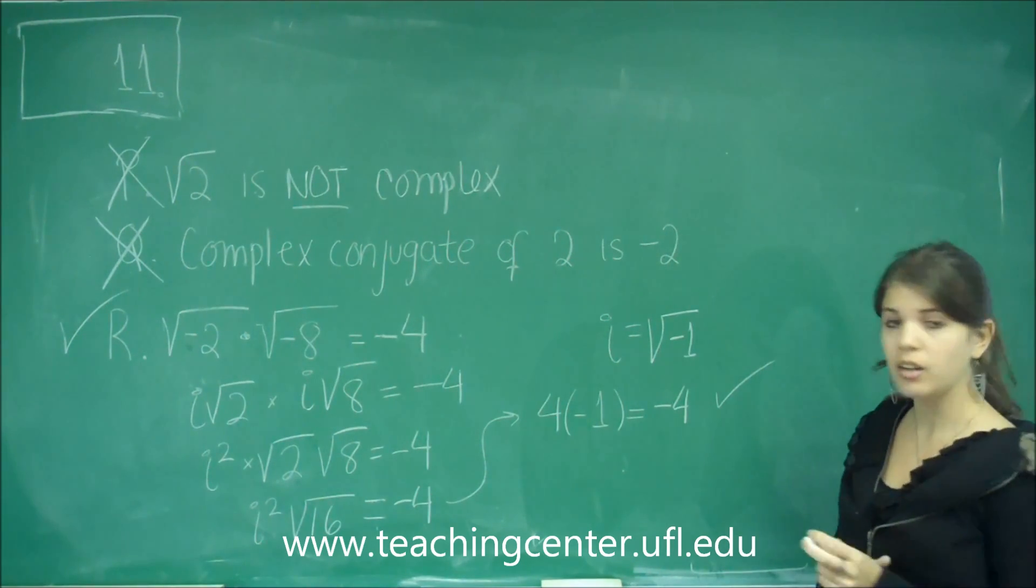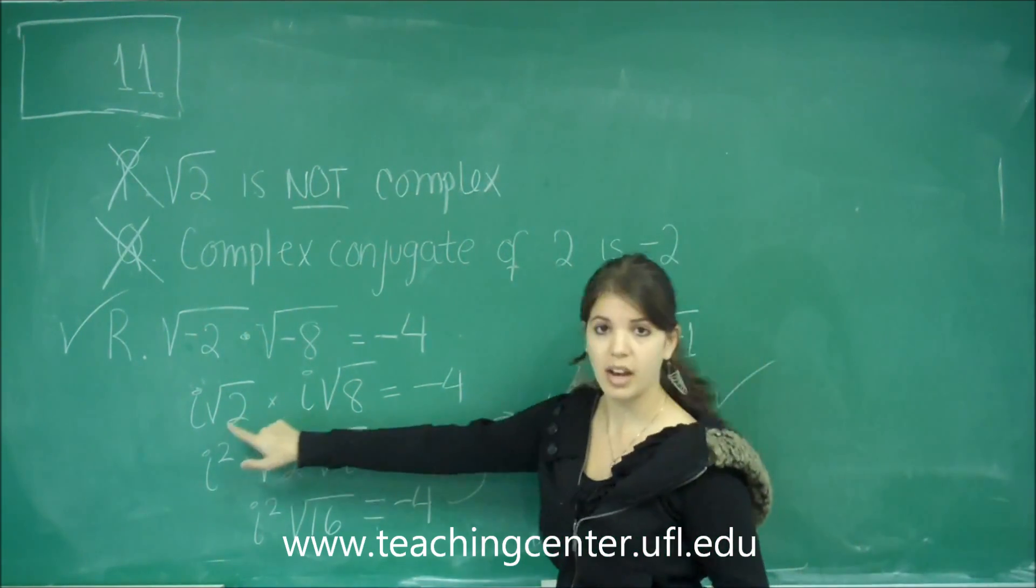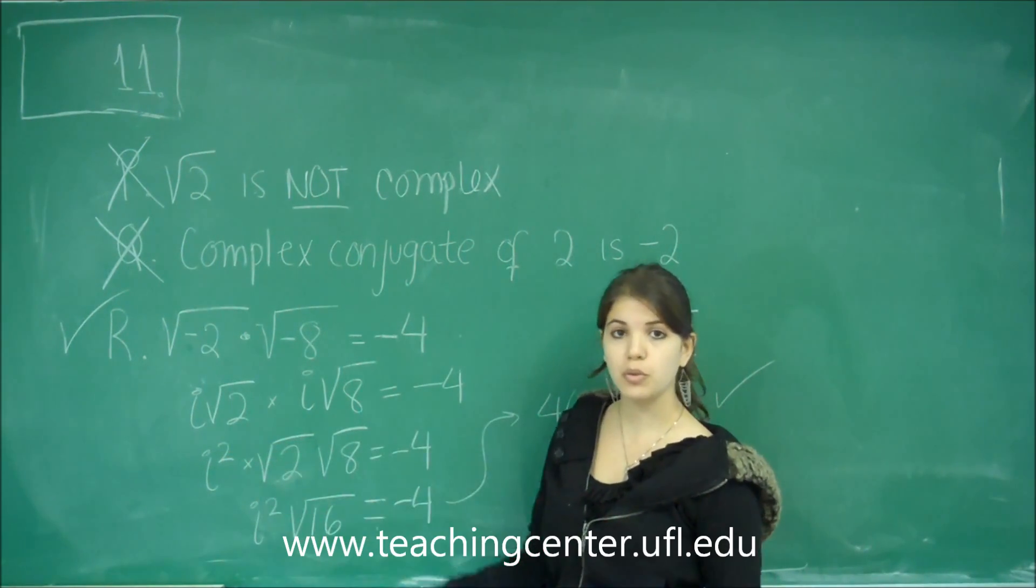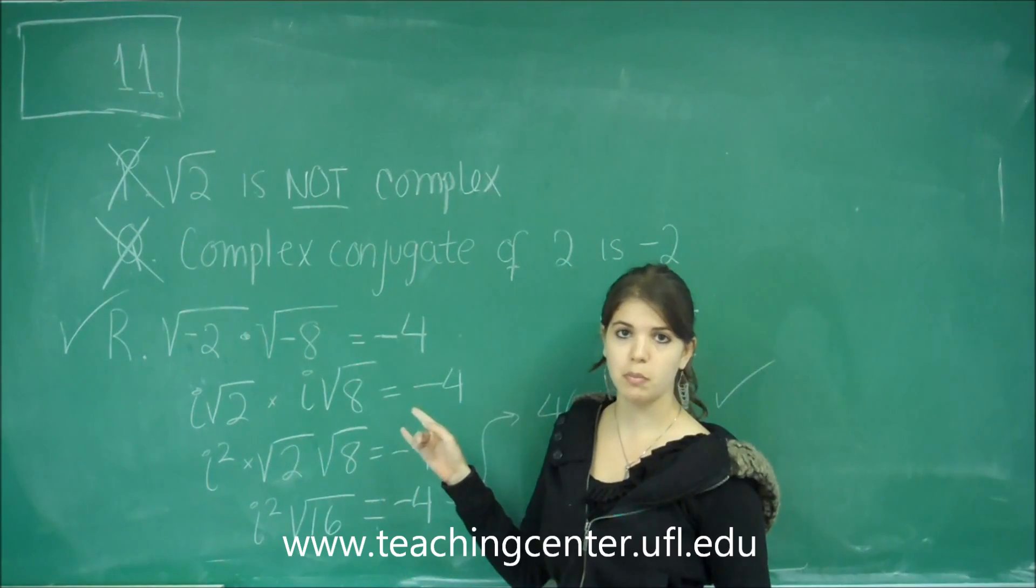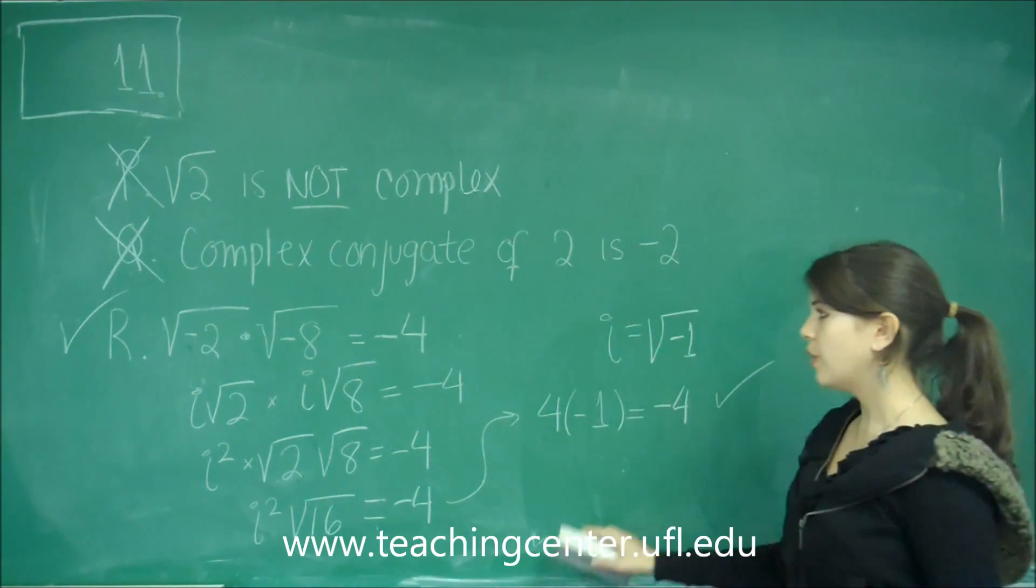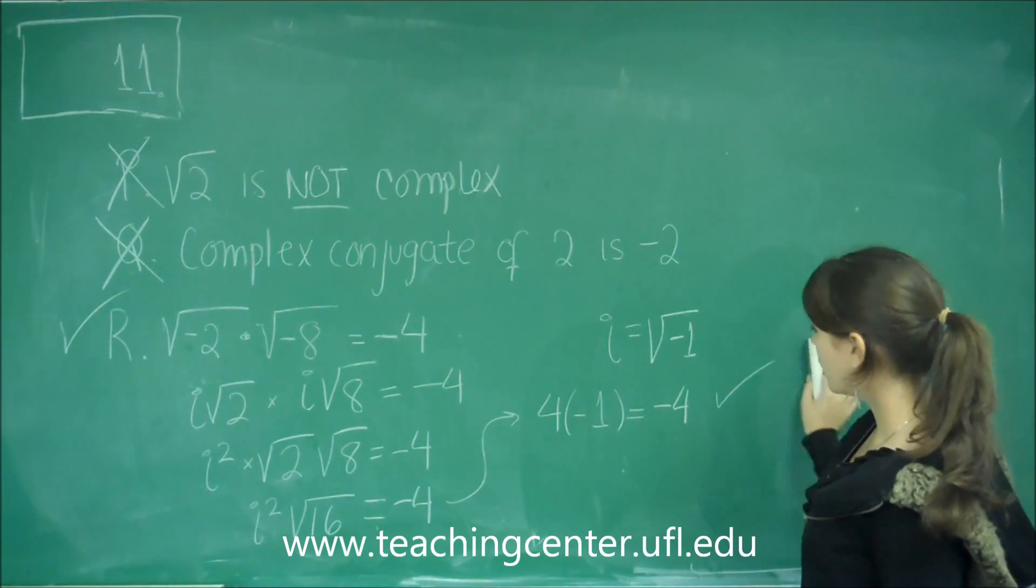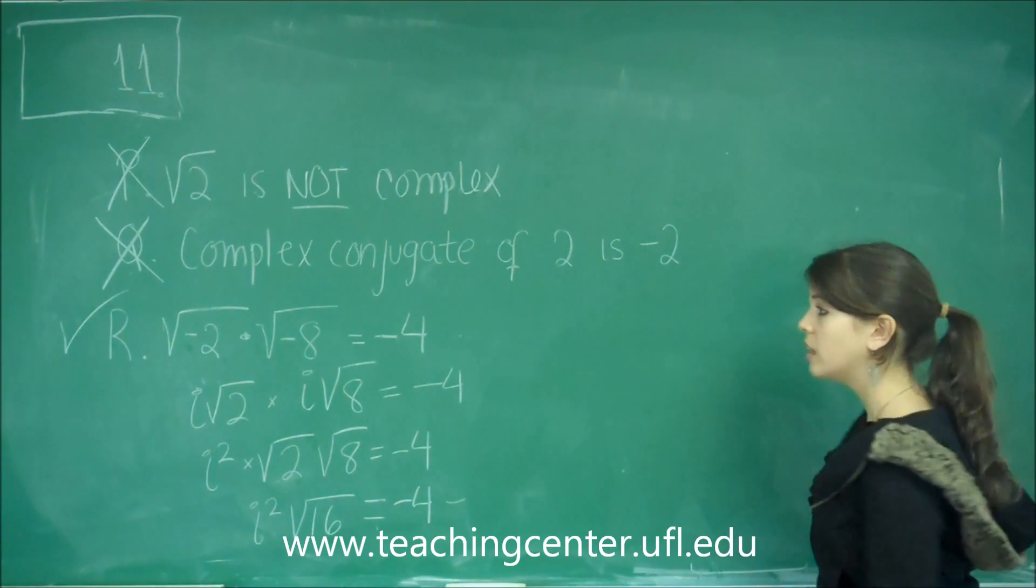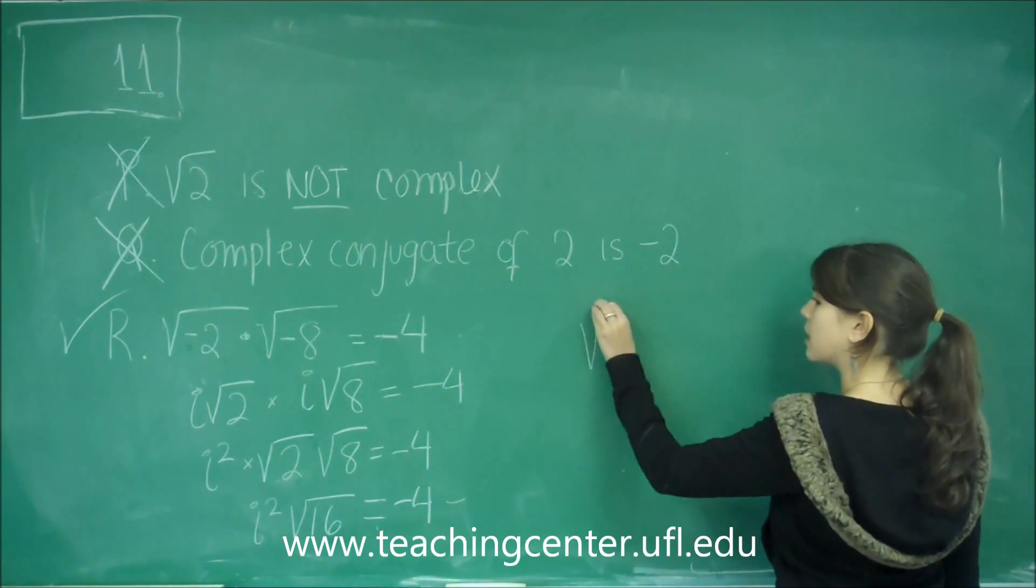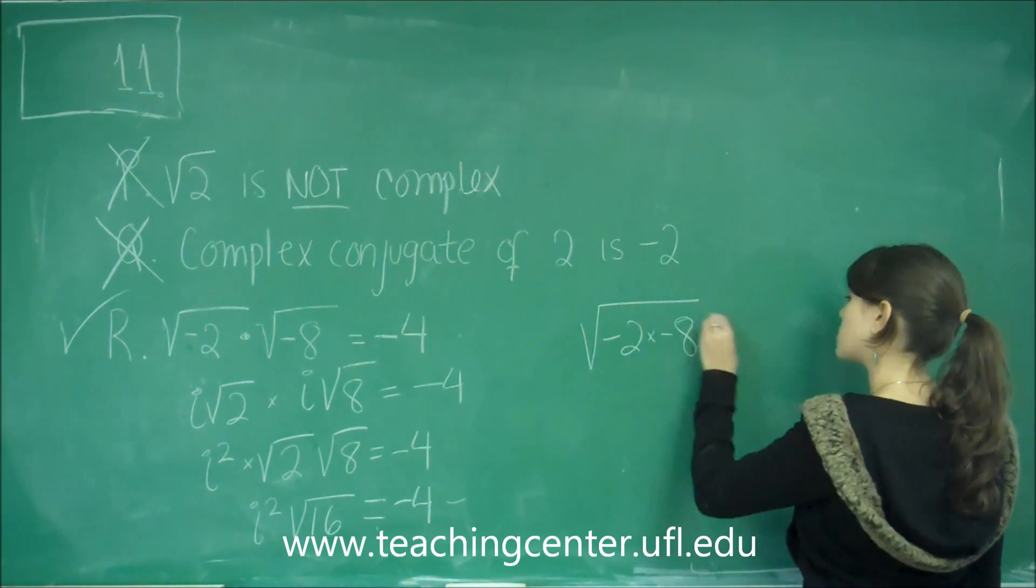And also, make sure that you're doing this via taking out I's. Because you could do it the wrong way and get 4 equals to negative 4, and you would normally put that as wrong. And I'll show you how you would have gotten that so that you don't make that mistake. If I wouldn't have used the definition of I, I would have said, let's put together the negative 2 and the negative 8 under the same square root.